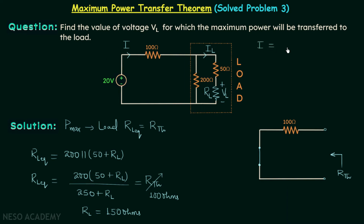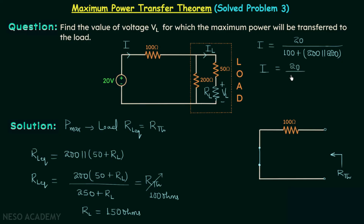To find I_L we first find the total current I. With a 20V source and the equivalent resistance being 100 ohms (from the parallel combination 200 in parallel with 200 = 100) plus 100 ohms, we get: I = 20 / (100 + 100) = 20 / 200 = 1/10 ampere.